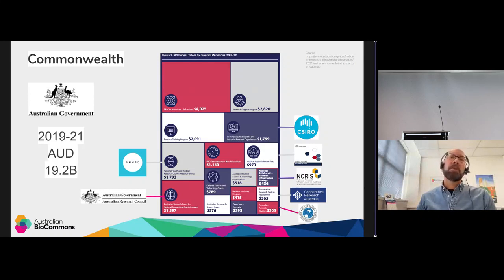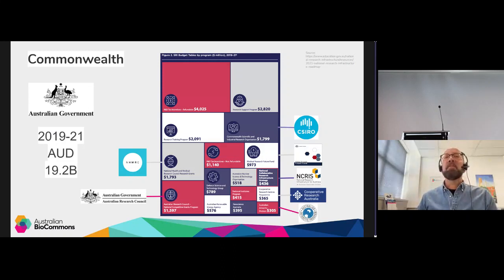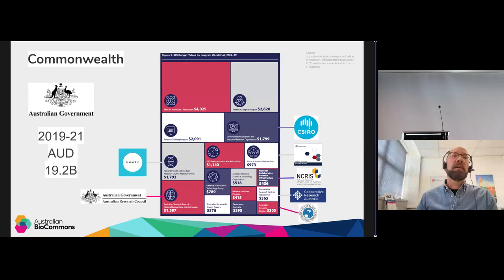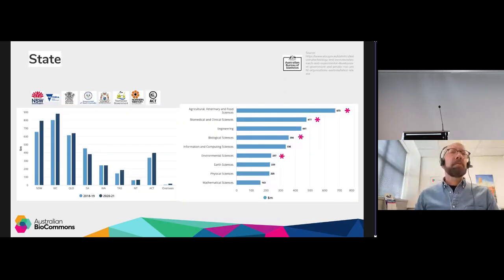Highlighting the boxes representing life science funding: CSIRO attracts a large amount of Commonwealth investment — not all for life science, but across all areas. The NHMRC attracts significant funding, as does the Australian Research Council. There's also the Medical Research Future Fund and other groups focused on life science. This represents considerable budget spent on life science research.